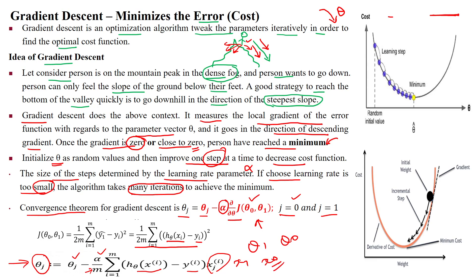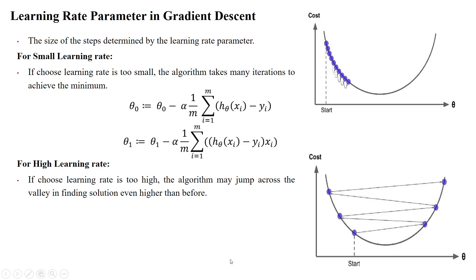For theta 1, the data point will be x1; for theta 0, it will be x0 — that is the feature value of the ith sample. The learning rate determines the step size. If you take alpha equal to 0.01, the step size is very minimal, and at each step the error — the cost, or total error — is reducing one by one until it reaches the minimal error, which is the minimum cost.